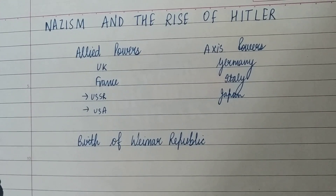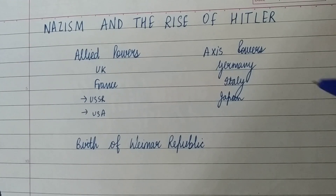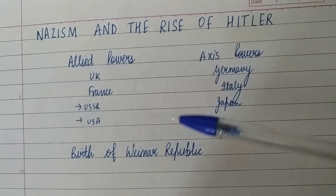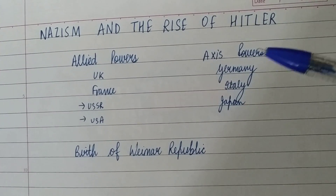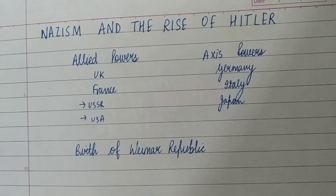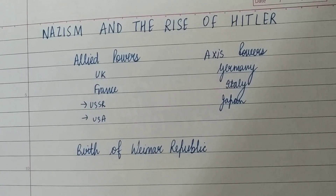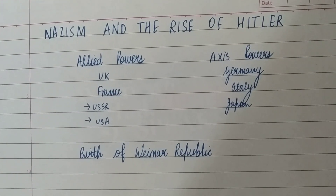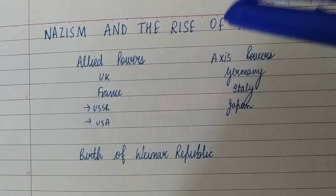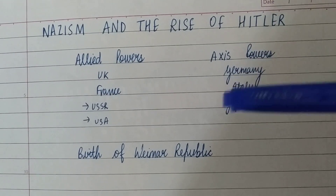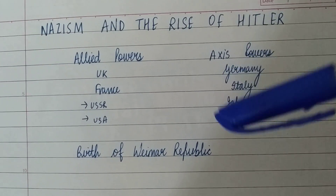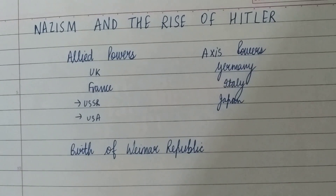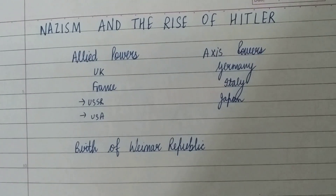Hello everyone, welcome to my channel Study Junction. In this video we are going to study the chapter Nazism and the Rise of Hitler for Class 9 Social Science. The Nazi story starts from May 1945 when Germany surrendered to the allies. Allied powers were initially UK and France, and after that they were joined by USSR and USA.